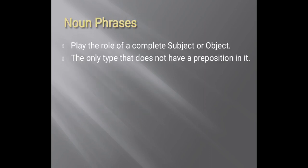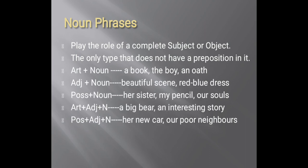We have seen noun phrases. A noun phrase plays the role of a complete subject or object in a sentence — subject, verb, object order. It is the only type of phrase that does not have a preposition in it. The other types of phrases use a preposition, but a noun phrase does not.